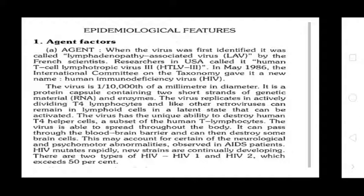The virus is approximately one ten-thousandth of a millimeter in diameter. It is a protein capsule containing two short strands of genetic material RNA and enzymes. The virus replicates in actively dividing T4 lymphocytes and, like other retroviruses, can remain in lymphocyte cells in a latent state that can be activated. The virus has the unique ability to destroy human T4 helper cells, a subset of human T lymphocytes, and can spread throughout the body, pass through the blood-brain barrier, and destroy some brain cells, accounting for certain neurological and psychomotor abnormalities observed in AIDS patients. HIV mutates rapidly and new strains are continually developing. There are two types of HIV: HIV-1 and HIV-2, the latter being less virulent.